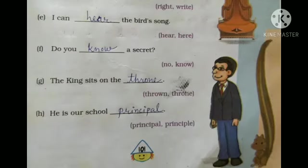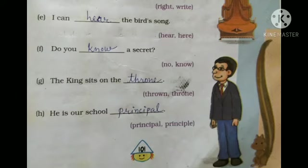In (e), 'I can ___ the bird's song': H-E-A-R means to listen and H-E-R-E means this place, so the correct word is H-E-A-R. In (f), 'do you ___ a secret?': N-O means no and K-N-O-W means to know, so the correct word is K-N-O-W.